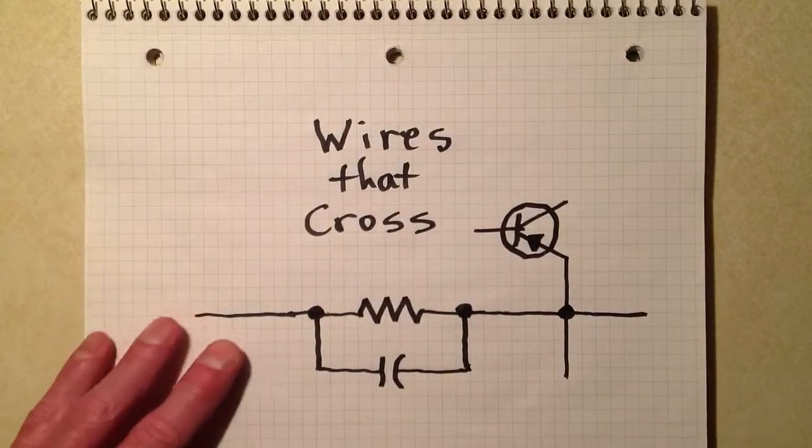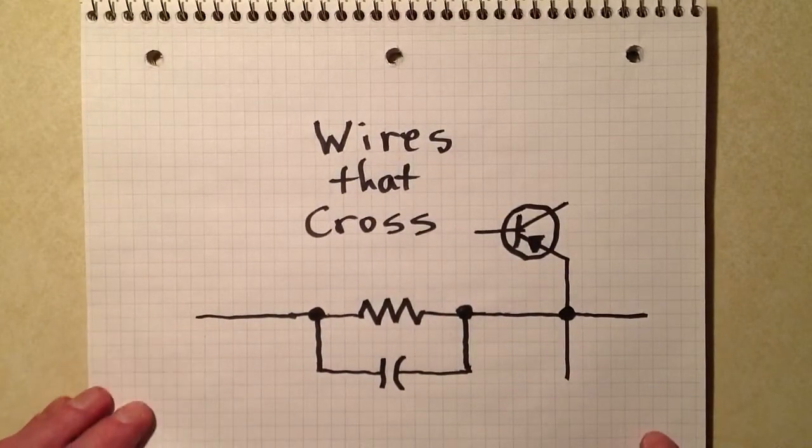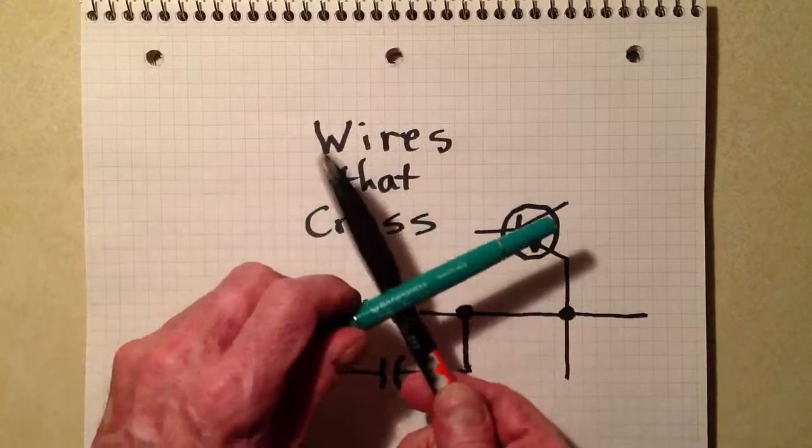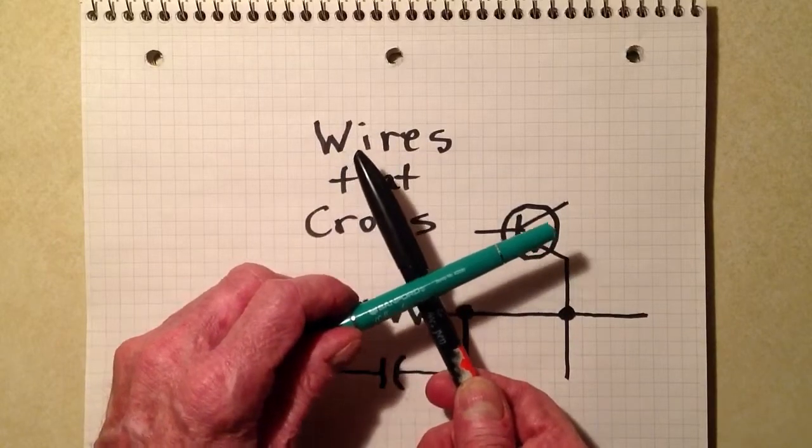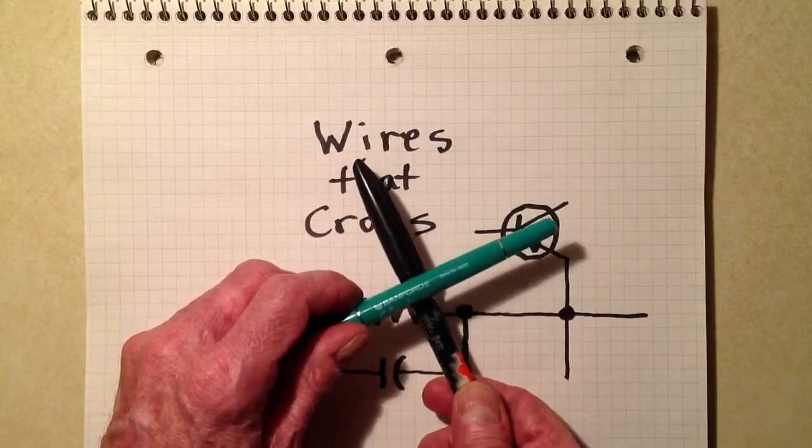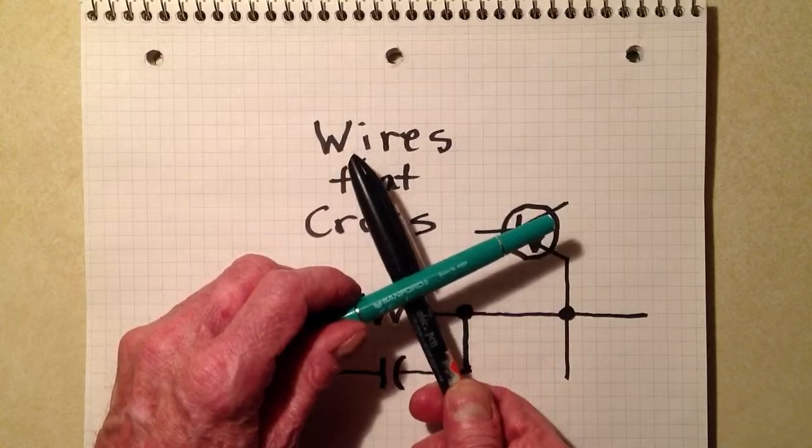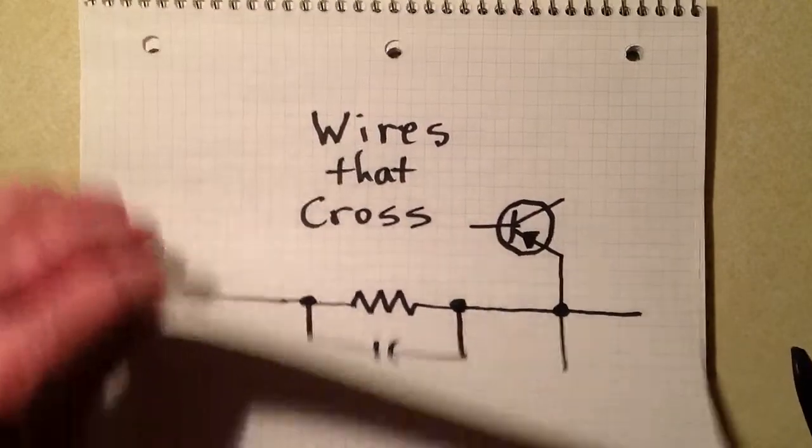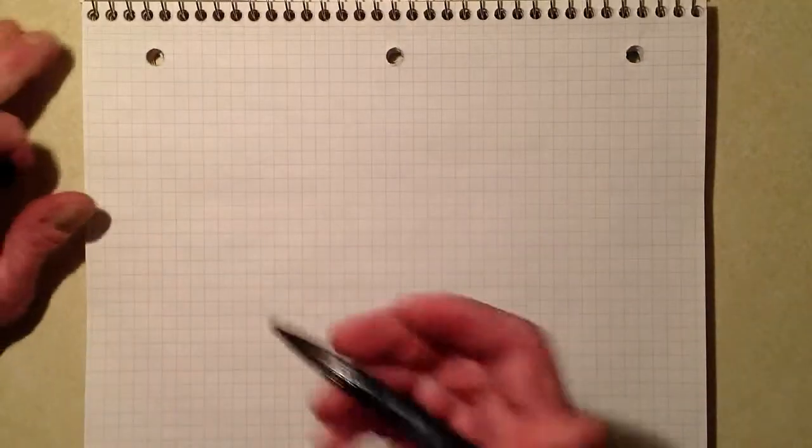Otherwise, you should assume that they are not connected to each other and they simply cross over each other like these two writing instruments would. They are not connected if there's no dot, but this can be a little bit confusing because you see...